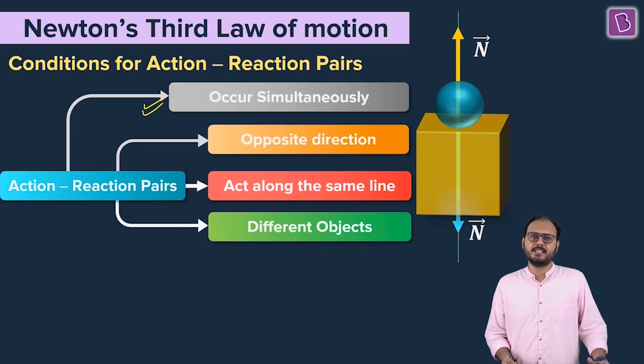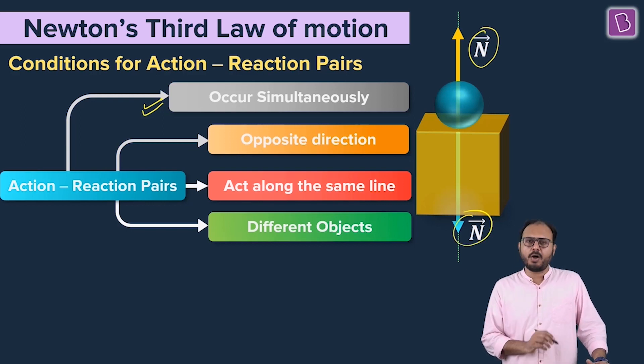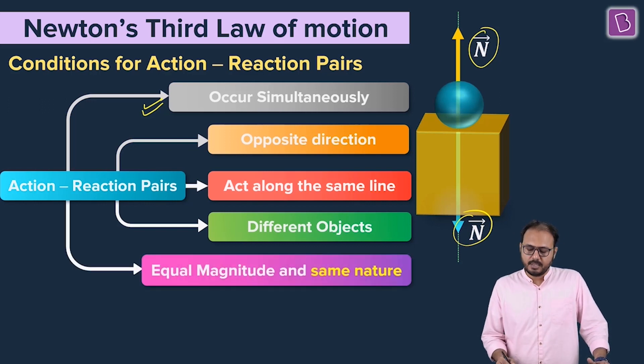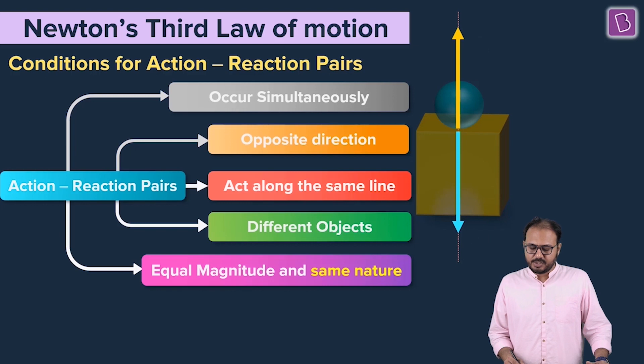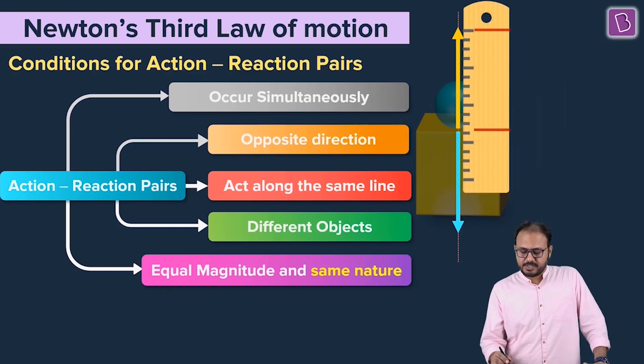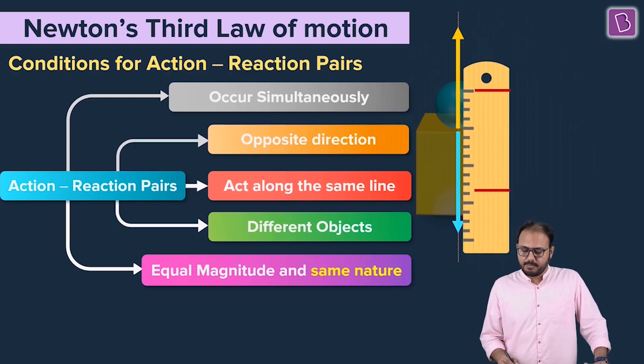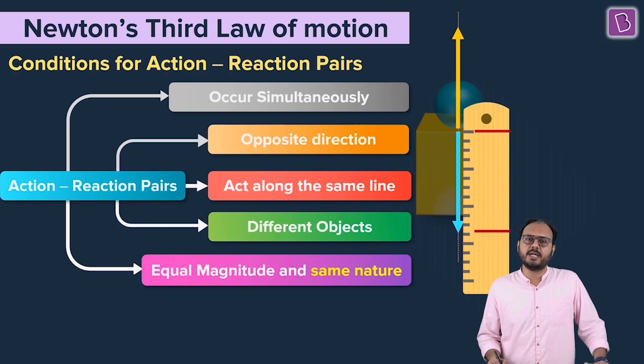Different objects. This guy, upward force is acting on the sphere. Downward force is acting on the block. Different objects. Because there are two bodies involved. Equal magnitude and equal nature and same nature. What does it mean? It's the same kind of force. The upper N is also normal reaction. The lower N is also normal reaction. And equal magnitude. Let's use a ruler. Can you see a ruler? Remember, if this ruler measures the length between the two red lines of the upper vector, the same ruler will say that the blue line is also between the two reds.